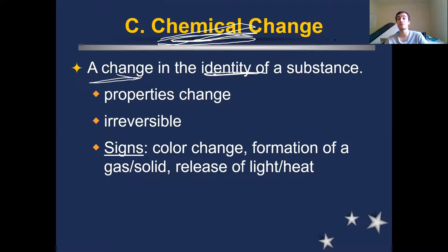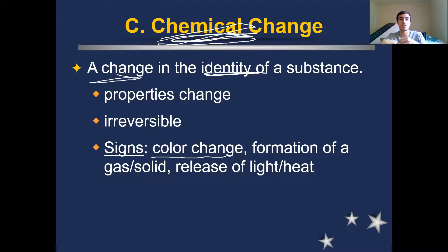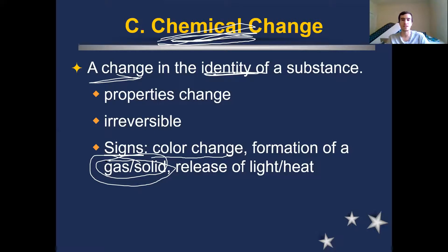There are some signs you can look for to tell you that a chemical change might be happening. If your substance changes color — and I don't mean mixing Kool-Aid powder into water — I mean if you have a clear substance and add a different clear substance and all of a sudden purple appears, that would be a sign of a chemical change. If a new gas or solid is formed — all of a sudden something starts bubbling in your reaction, not because it's getting hot but just because of the chemicals you've combined — that is a sign of a chemical change, like the classic science fair volcano mixing baking powder and vinegar.